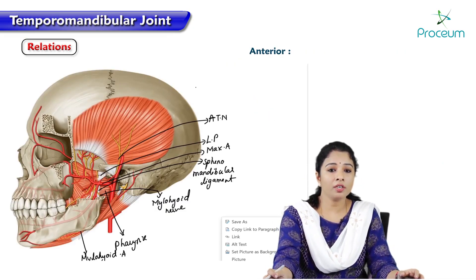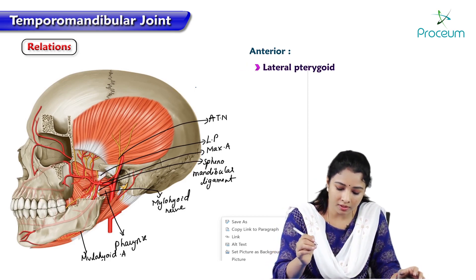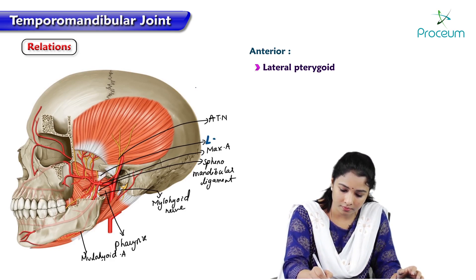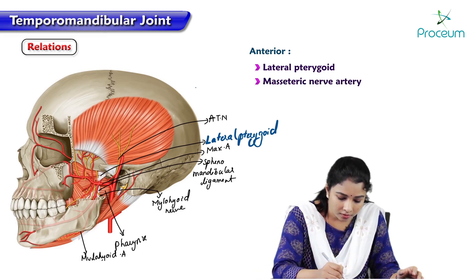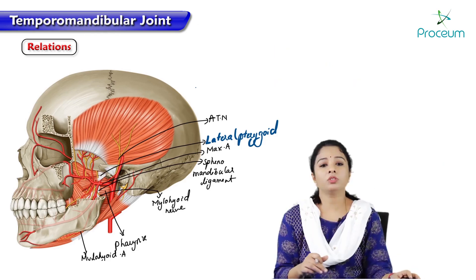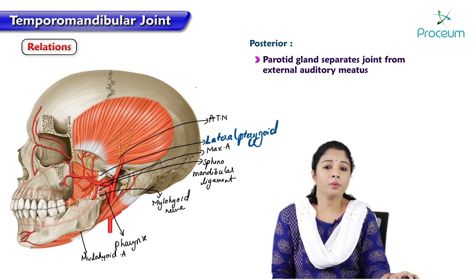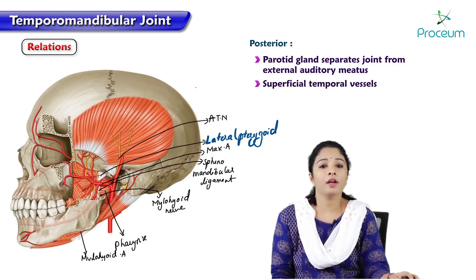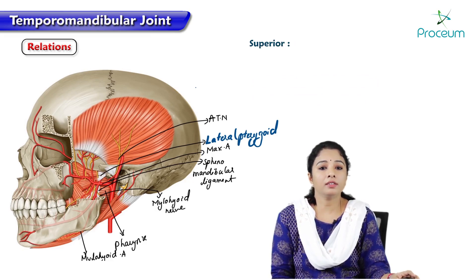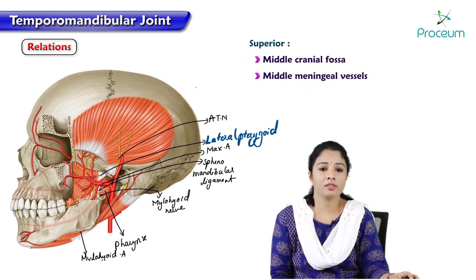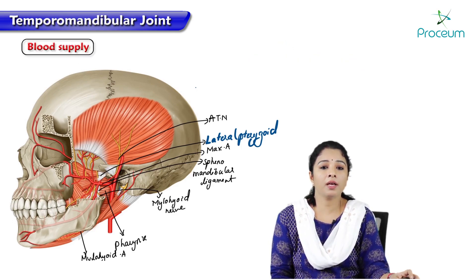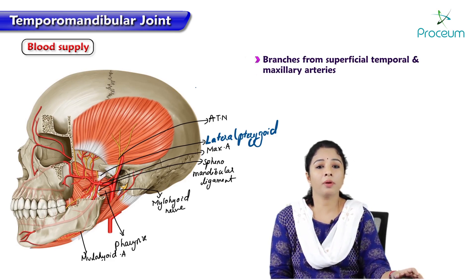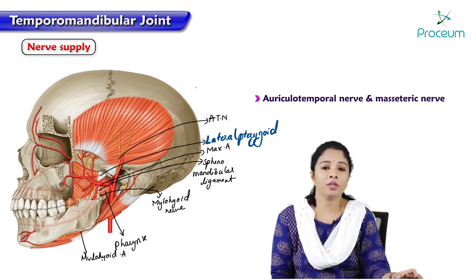Anteriorly the TMJ is related to the lateral pterygoid muscle and the masseteric nerves and vessels. Posteriorly it is related to the parotid gland, which separates the joint from the external auditory meatus, as well as the superficial temporal vessels and auriculotemporal nerve. Superiorly it is related to the middle cranial fossa and middle meningeal vessels. Inferiorly it is related to the maxillary artery and maxillary vein. Blood supply is from branches of the superficial temporal and maxillary arteries. Nerve supply is from the auriculotemporal nerve and masseteric nerve.